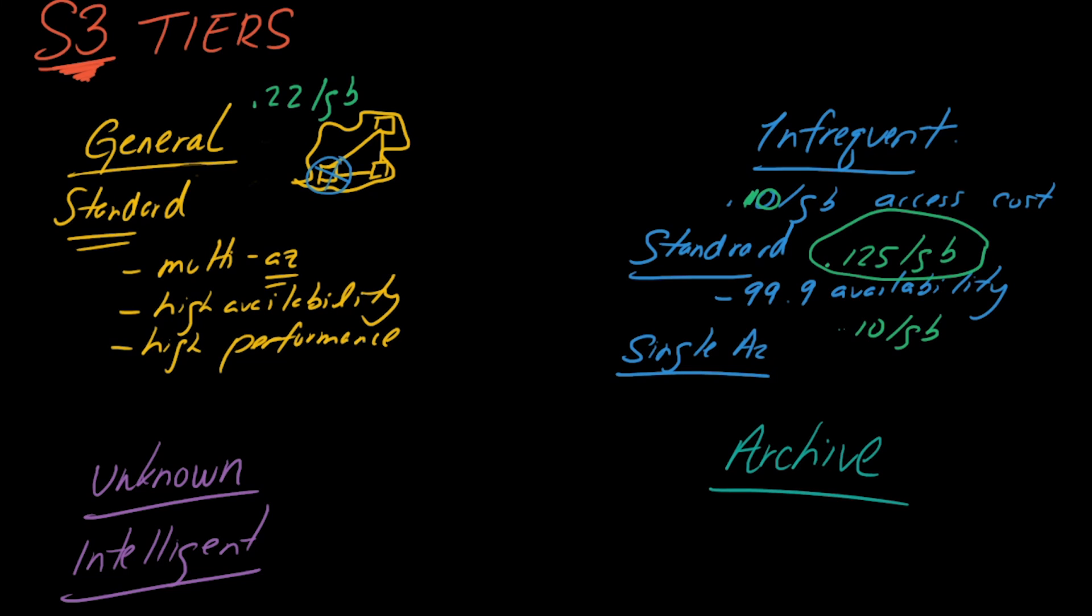Now for intelligent it's a combination of general and infrequent. So it uses the properties of both of these. Now it'll basically partition your data. So it'll say if you're making a lot of queries on your S3 bucket, I'm going to move all the data within that over to general because that's got standard high multi AZ high availability and high performance. And then when the traffic dies down it'll move that data over to infrequent. So that's how it works. It's a nice balance of both worlds. It'll move you between the general and infrequent depending on your access pattern.